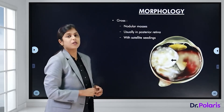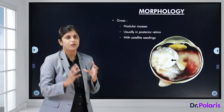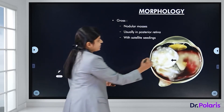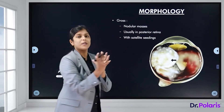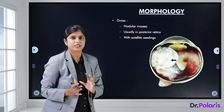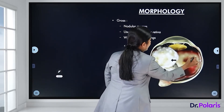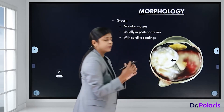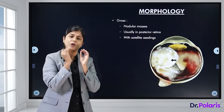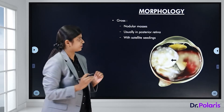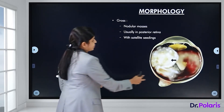Morphologically, retinoblastomas are nodular masses that fill up the globe, usually seen in the posterior retina, with small satellite lesions. They are hard and can have significant calcific deposits.